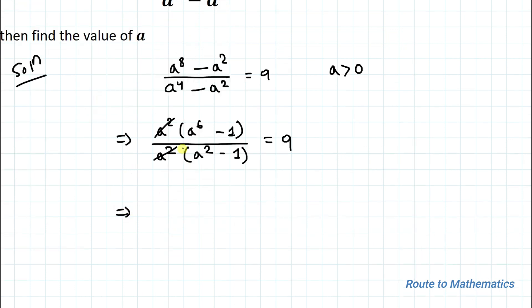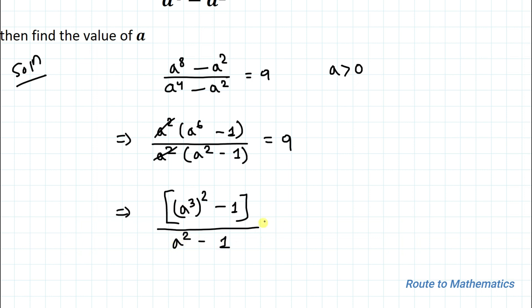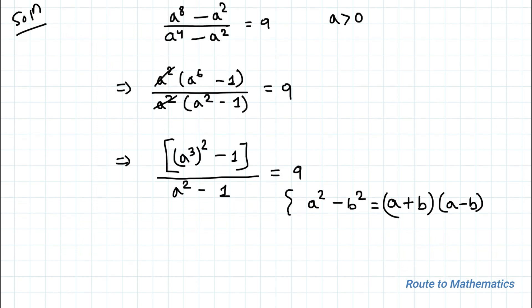Now in the next step, I can write a⁶ as (a³)² minus 1, divided by a² minus 1 equals 9. Here I will apply the algebraic identity a² minus b² which equals (a + b)(a − b).